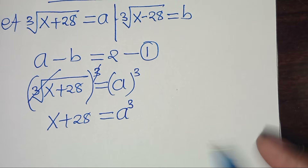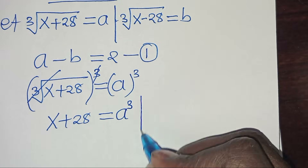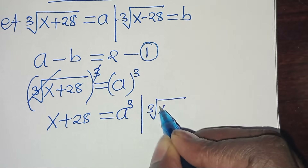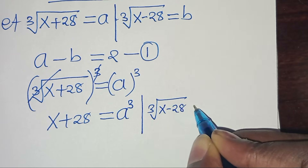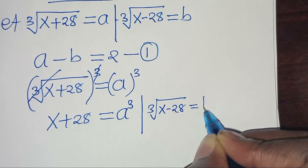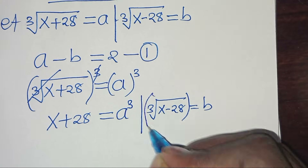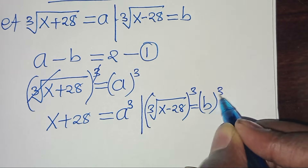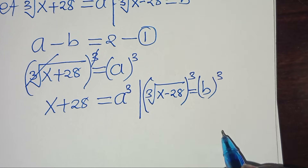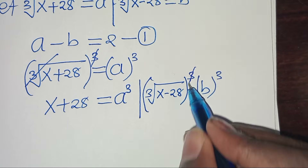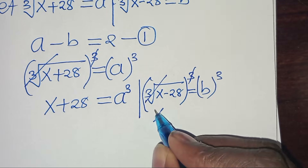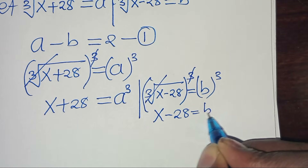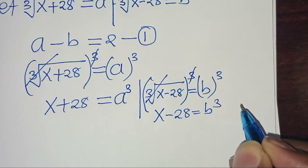We also have the cube root of x minus 28 equal to b. To eliminate this cube root sign, we raise both sides to the power of 3, so that we have x minus 28 equals b cubed.